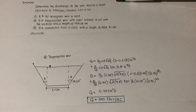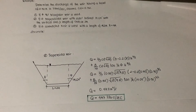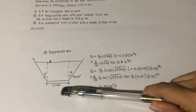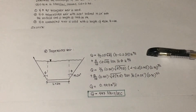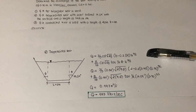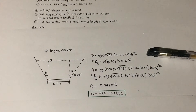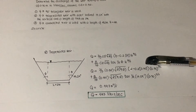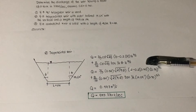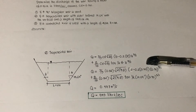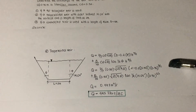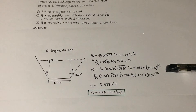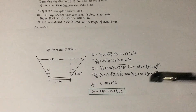For number two, we already know the head and coefficient of discharge. From the given figure, the base of the trapezoidal weir is 2 meters and the angle theta is 14.04 degrees. Since velocity approach is neglected, we use the trapezoidal weir discharge formula. Substituting the values of Cd, g, base, head, and theta, then calculating and converting to liters per second, the final answer is 497 liters per second.